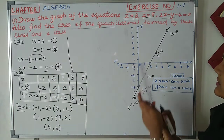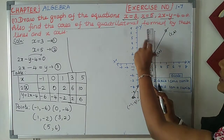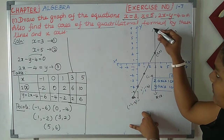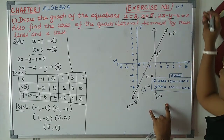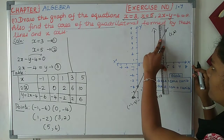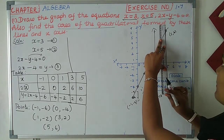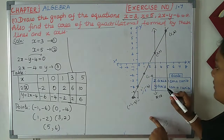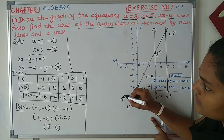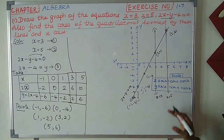The first equation is x equal to 3 — we plot that line. The second equation is x equal to 5 — we plot that line. Then the third equation: 2x minus y minus 4 equal to 0. Now we will get the graph data in space.